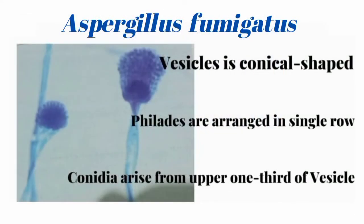Next one is Aspergillus fumigatus. The vesicle is conical shaped. Phialides are arranged in a single row. Conidia arise from the upper third of the vesicle.